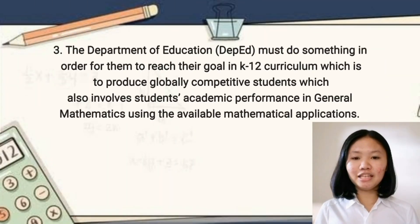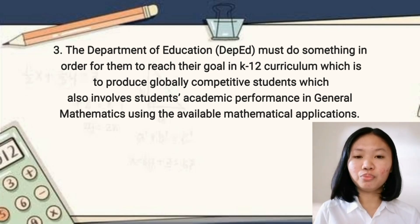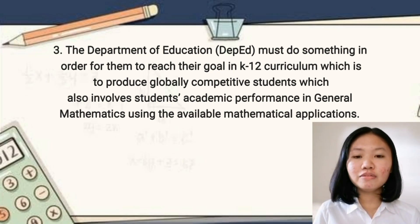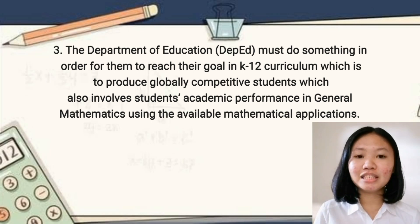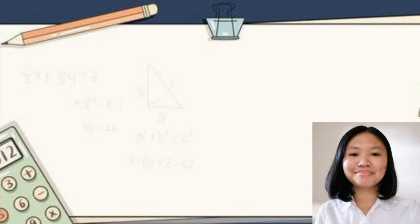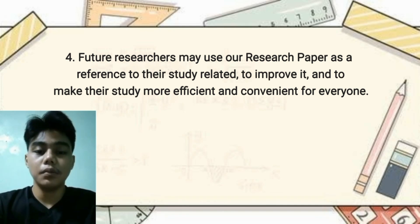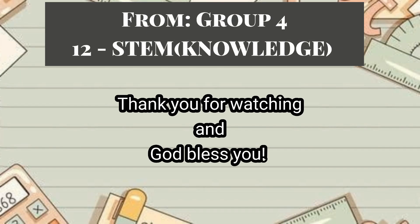Third Recommendation: The Department of Education must take action to reach their goal in the K-12 curriculum, which is to produce globally competitive students. This also involves the students' academic performance in general mathematics through the use of available mathematical applications. Future researchers may use this research paper as a reference to improve and make their study more efficient and convenient for everyone.